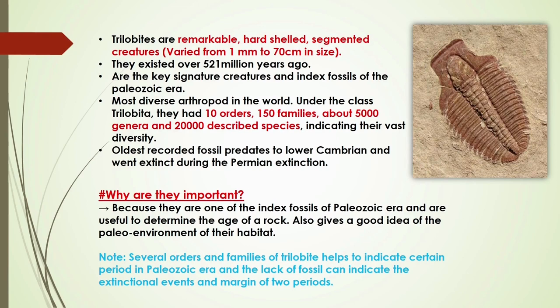Trilobites roamed around the world during the Paleozoic Era. They were about 1 millimeter to 70 centimeters in length depending on the species and were very diverse around the whole world. Under the trilobite class there were 10 orders, 150 families, about 5,000 genera, and over 20,000 described species.